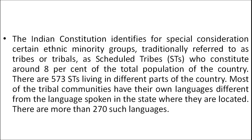The Indian constitution identifies for special consideration certain ethnic minority groups traditionally referred to as tribes or tribals as scheduled tribes, who constitute around 8% of the total population of the country. There are 573 scheduled tribes living in different parts of the country. Most tribal communities have their own languages, different from the languages spoken in the state where they are located, and there are more than 270 such languages.